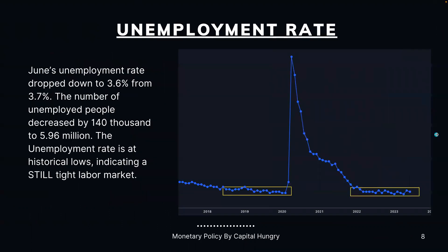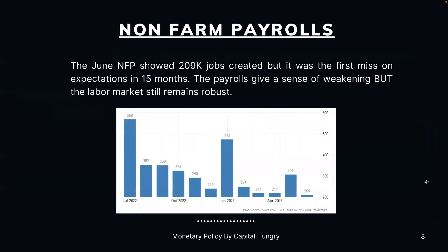June's unemployment rate dropped to 3.6% from 3.7%. The number of unemployed people decreased by 140,000 to 5.96 million, and the unemployment rate is still at historical lows, indicating a still tight labor market. For non-farm payrolls, the June NFP showed 209,000 jobs created, but it was the first miss on expectations in 15 months. The payrolls give a sense of weakening, but the labor market still remains robust.